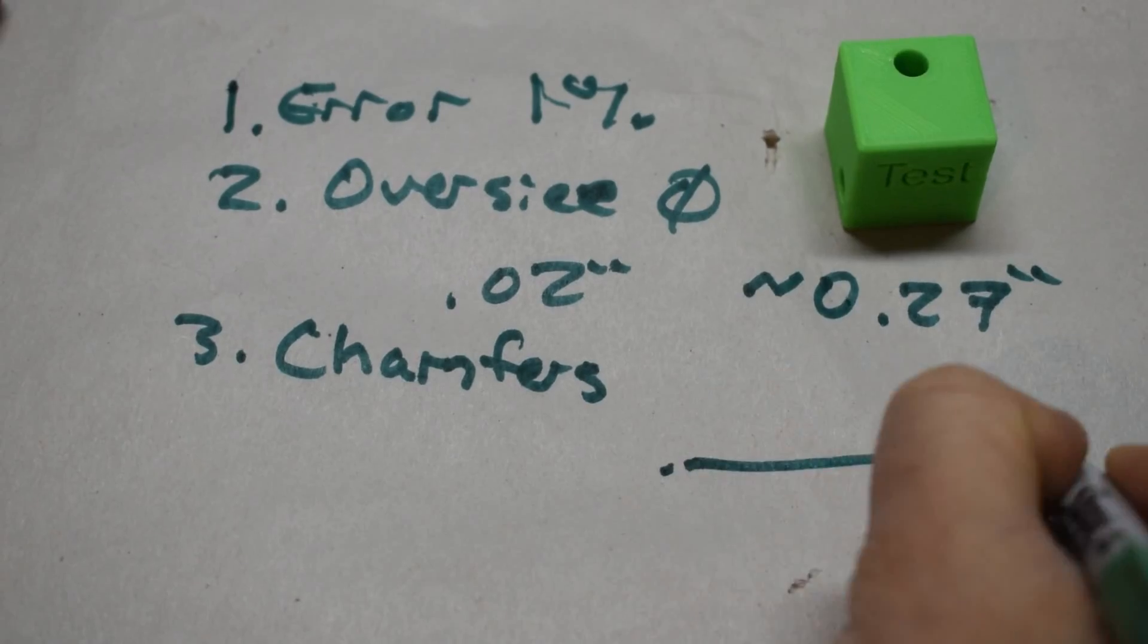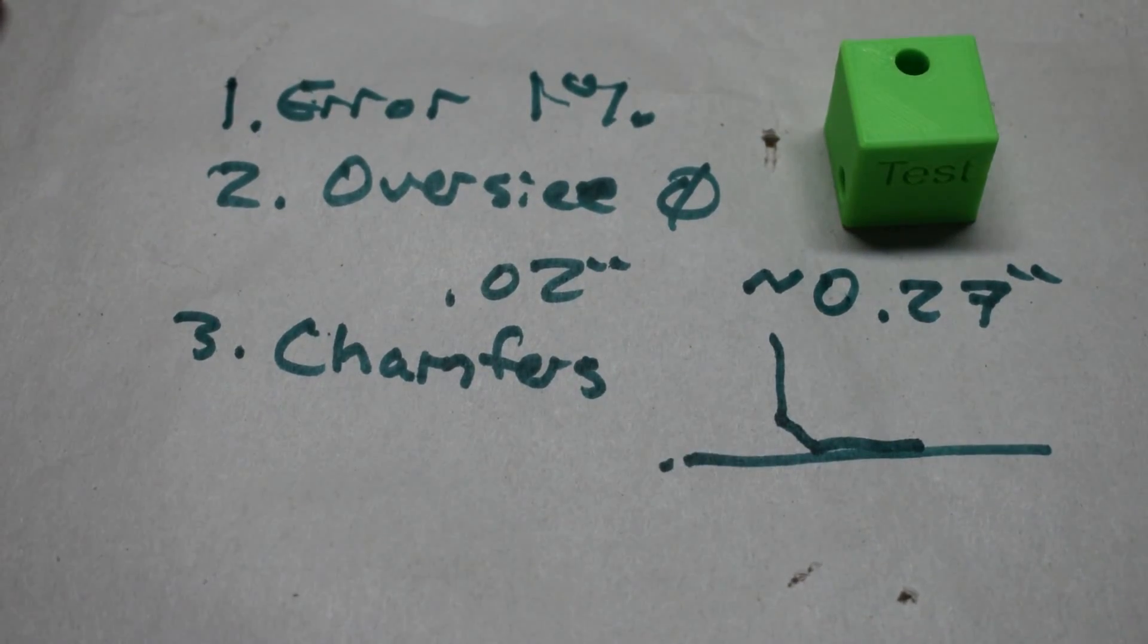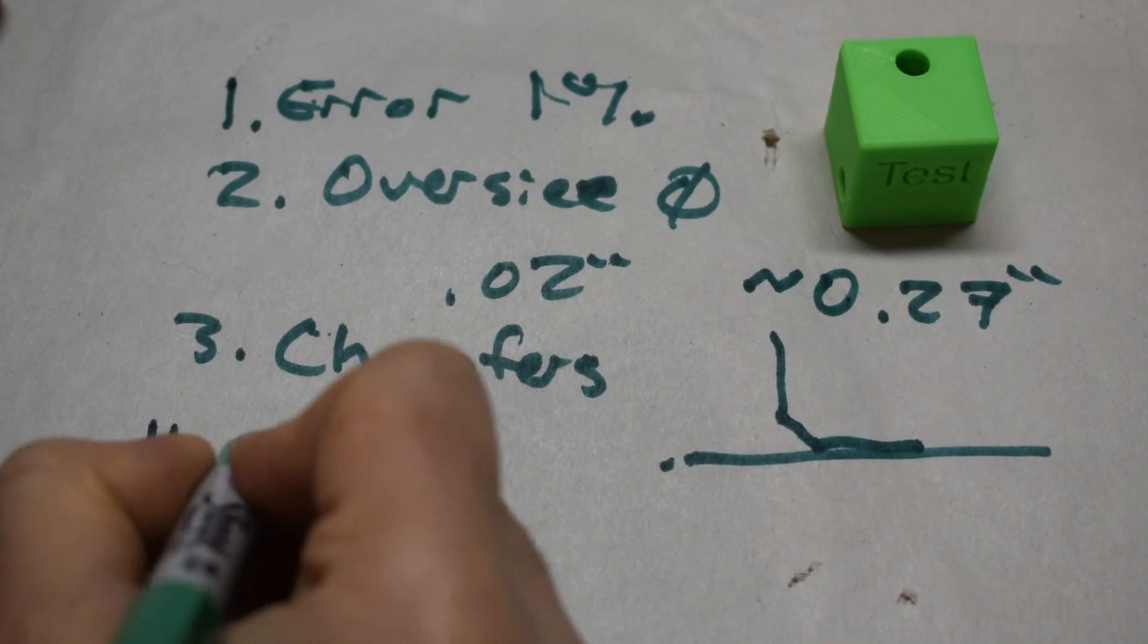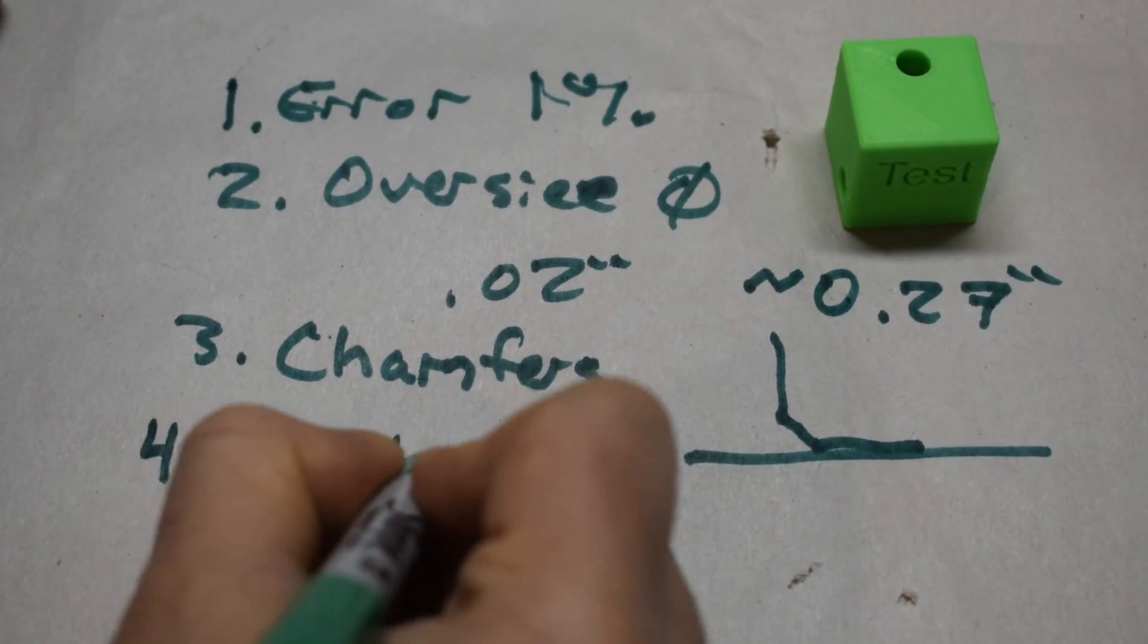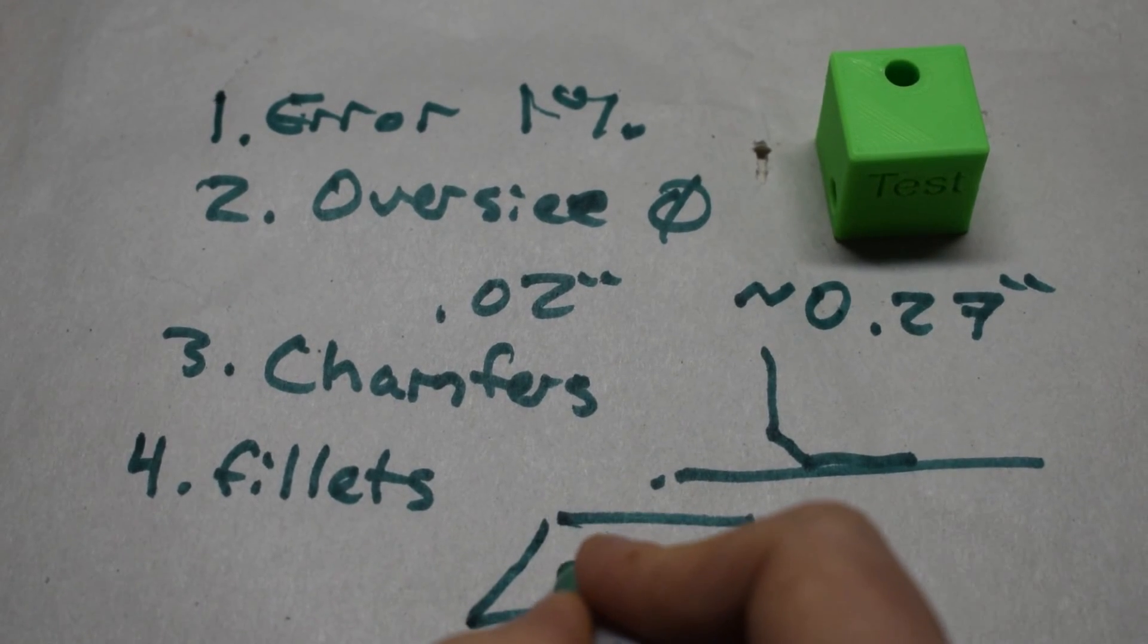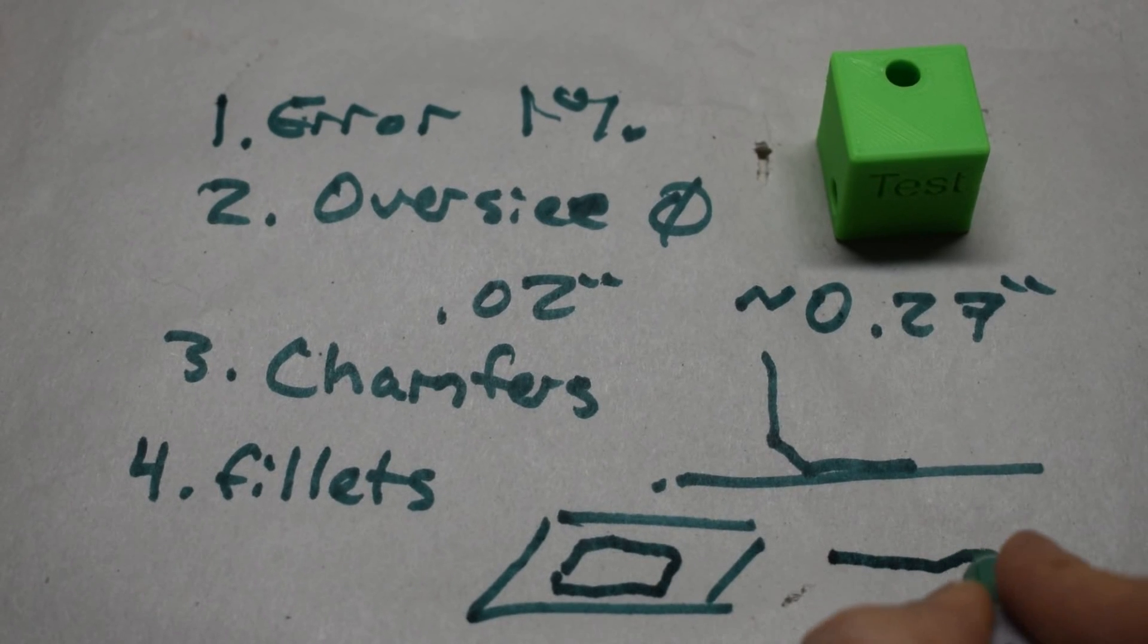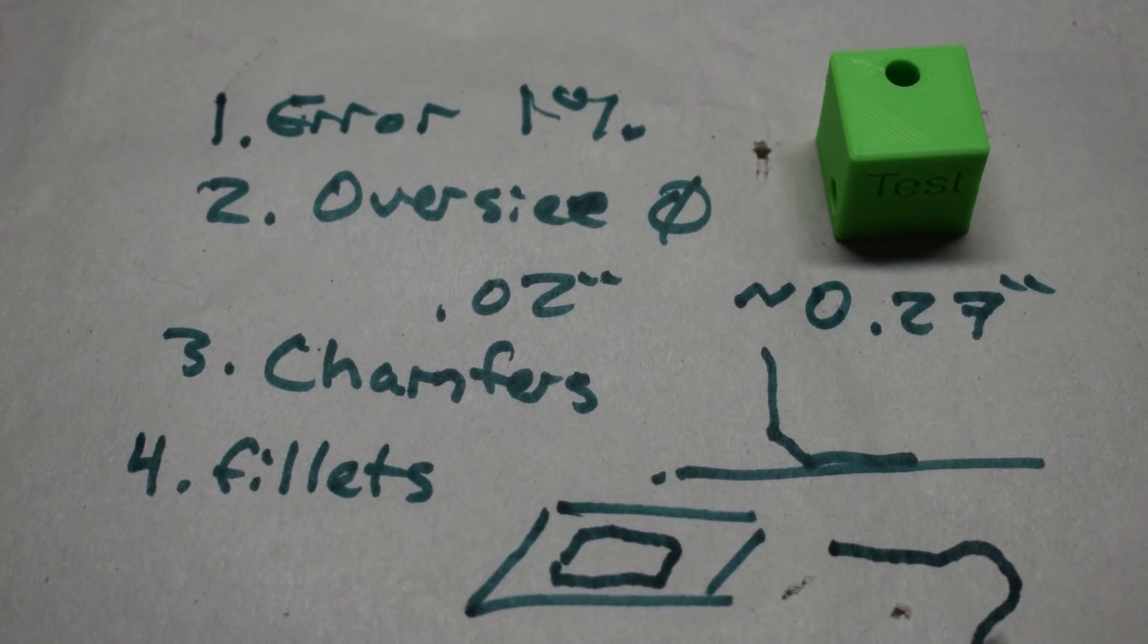Anywhere on the build plate that the part touches, chamfer those corners. I think that helps get a nice quality print. Number four: fillets. Anywhere that the nozzle is tracing on the build plate, round those corners. That'll help prevent those bulges on sharp corners that you sometimes see.